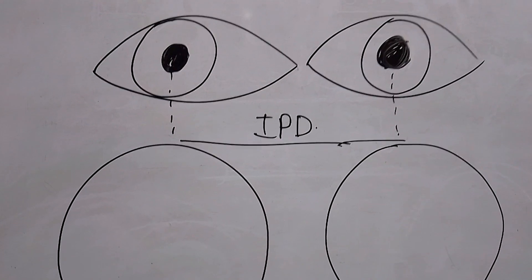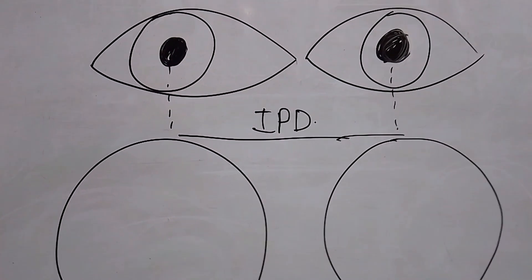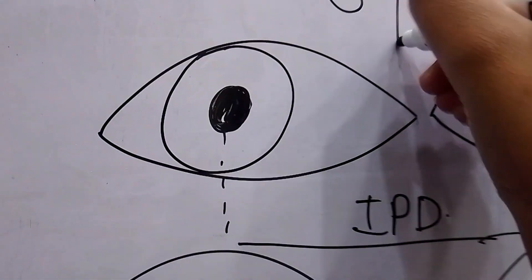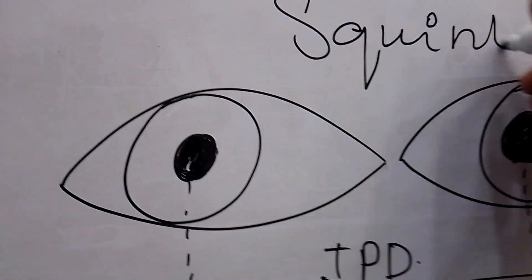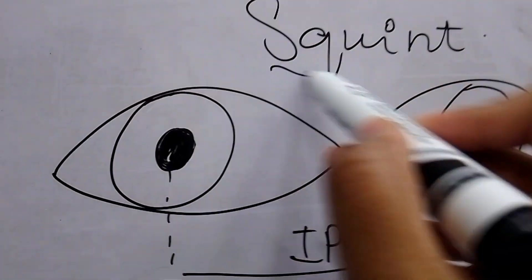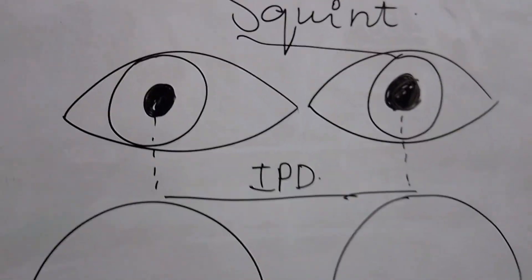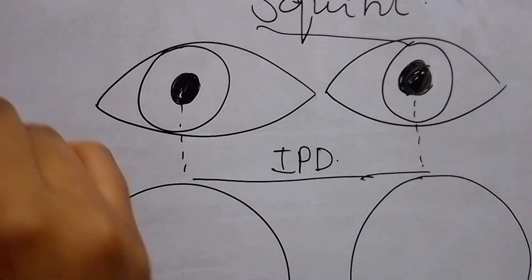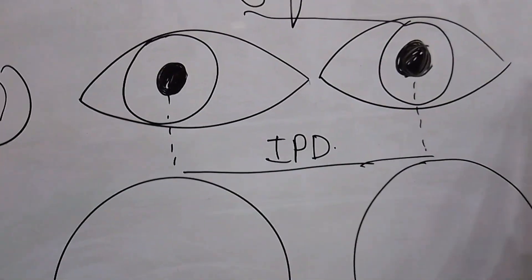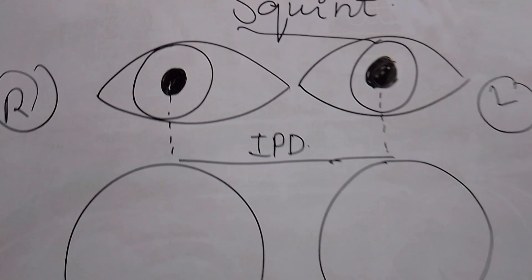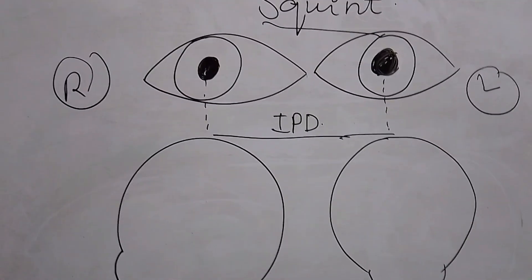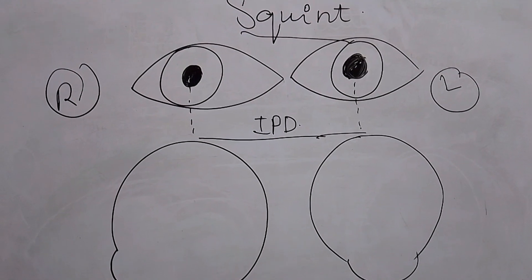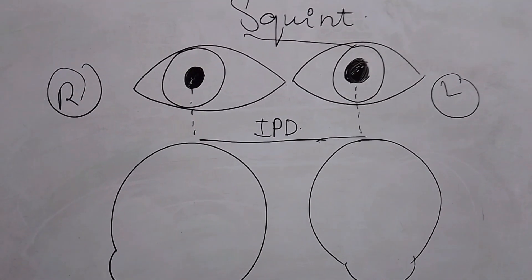Specifically, we will look at how to measure IPD if the patient has strabismus in his eyes. So in the case of squint, if the patient has squint, how can you evaluate the IPD? In this picture you can see the right eye and the left eye.